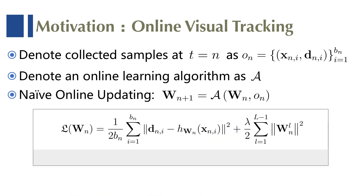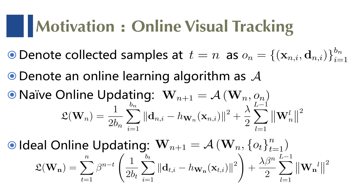The motivation behind this is that a naive online updating method without memory retention usually causes tracking drift due to overfitting to some non-accurate samples. However, how to conduct ideal online updating with memory retention is hardly investigated in the literature.